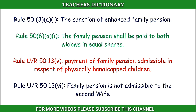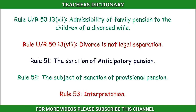Rule 50(AF1): The family pension is not admissible to the second wife. Rule 50(AF1): The family pension will be paid to both children under the second wife. Under Rule 50(13)(AF8): Divorce is not legal separation. Rule 51: The Sanction of Anticipatory Pension. Rule 52: The Subject of Sanction of Provisional Pension. Rule 53: Interpretation.